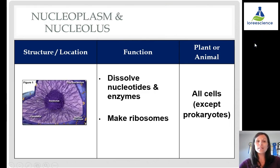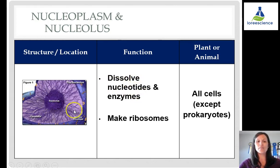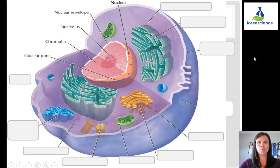The nucleoplasm is essentially the cytoplasm inside the nucleus. The nucleolus is a very dense region in the middle made of dissolved nucleotides and enzymes. The function of the nucleolus is to make ribosomes, found in all cells — both plants and animals — except for prokaryotes because they don't have a nucleus.